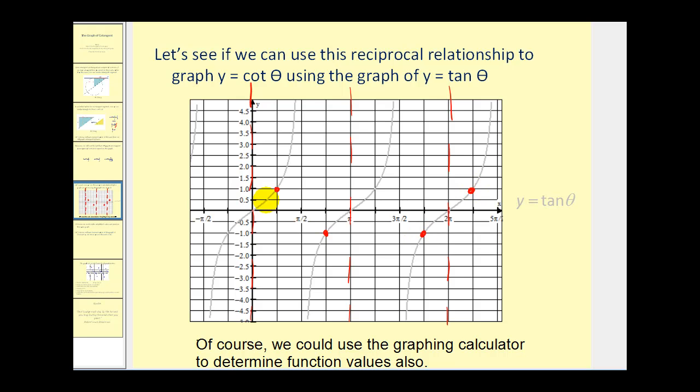For the same reason why when tangent is zero cotangent is undefined, where tangent is undefined or there's a vertical asymptote, cotangent would be zero.